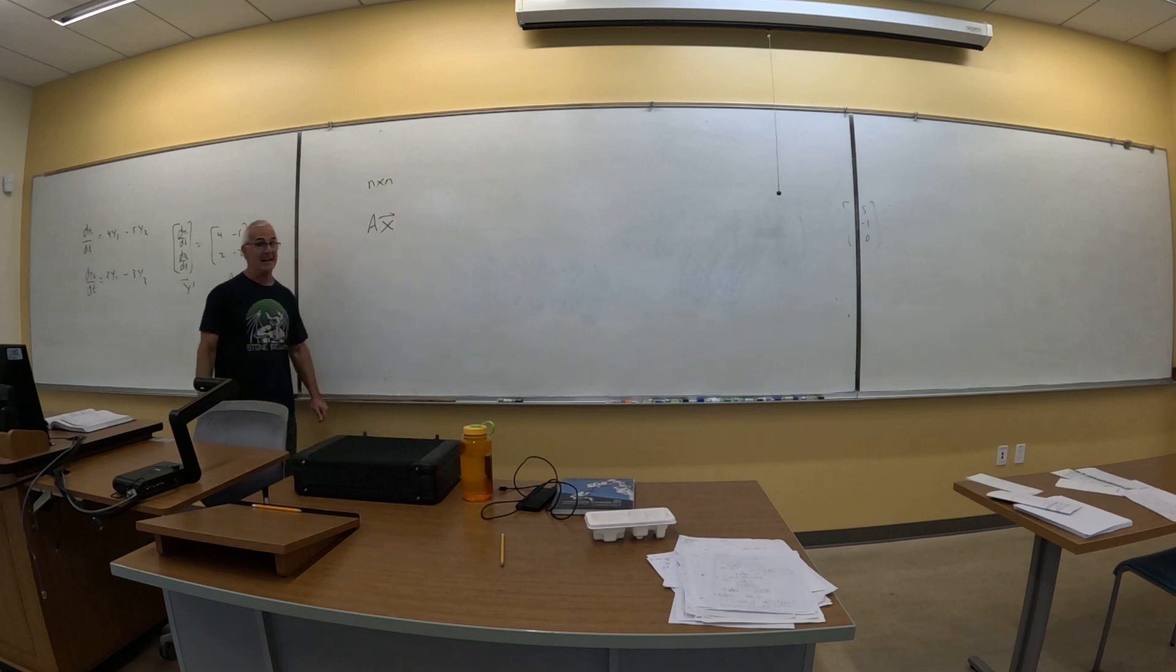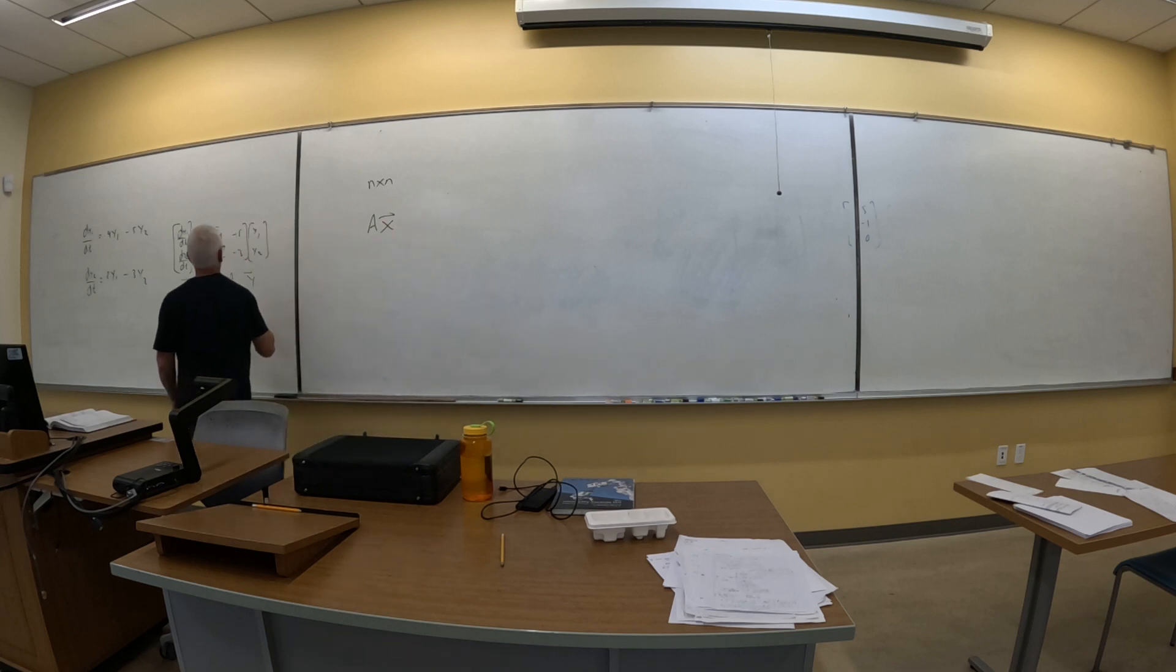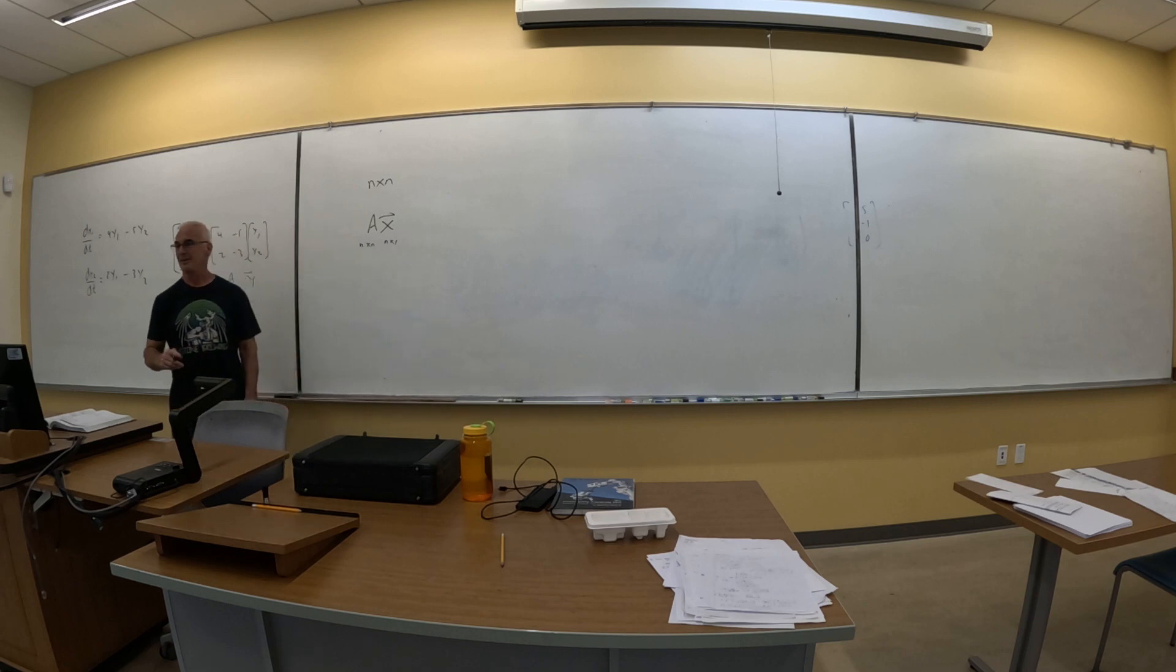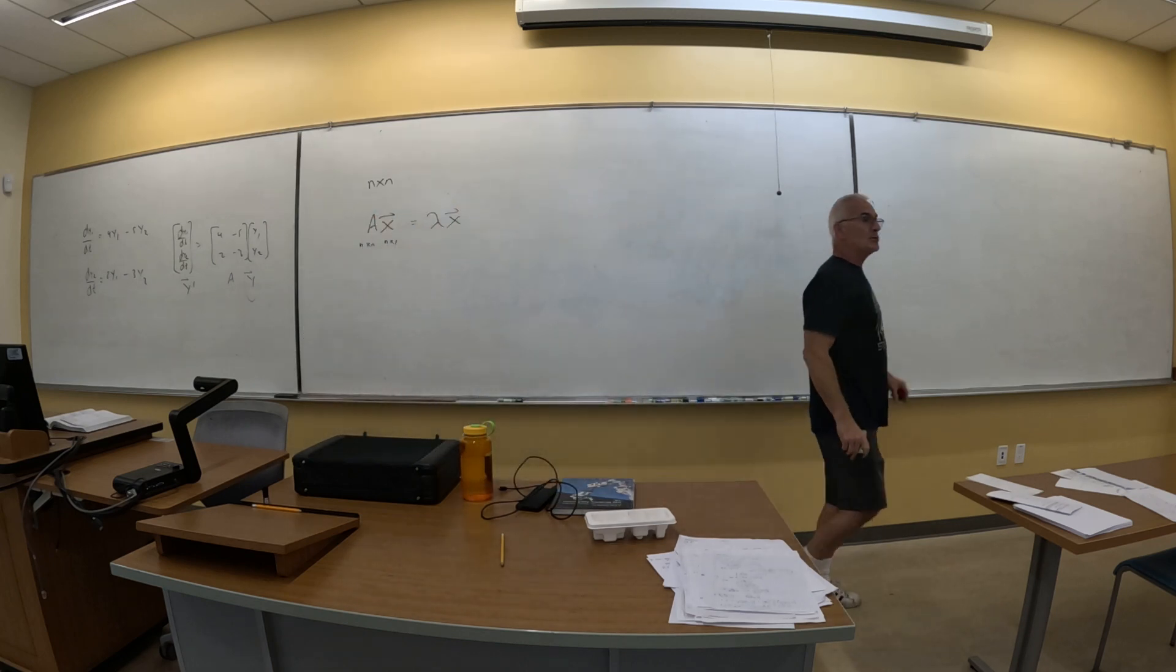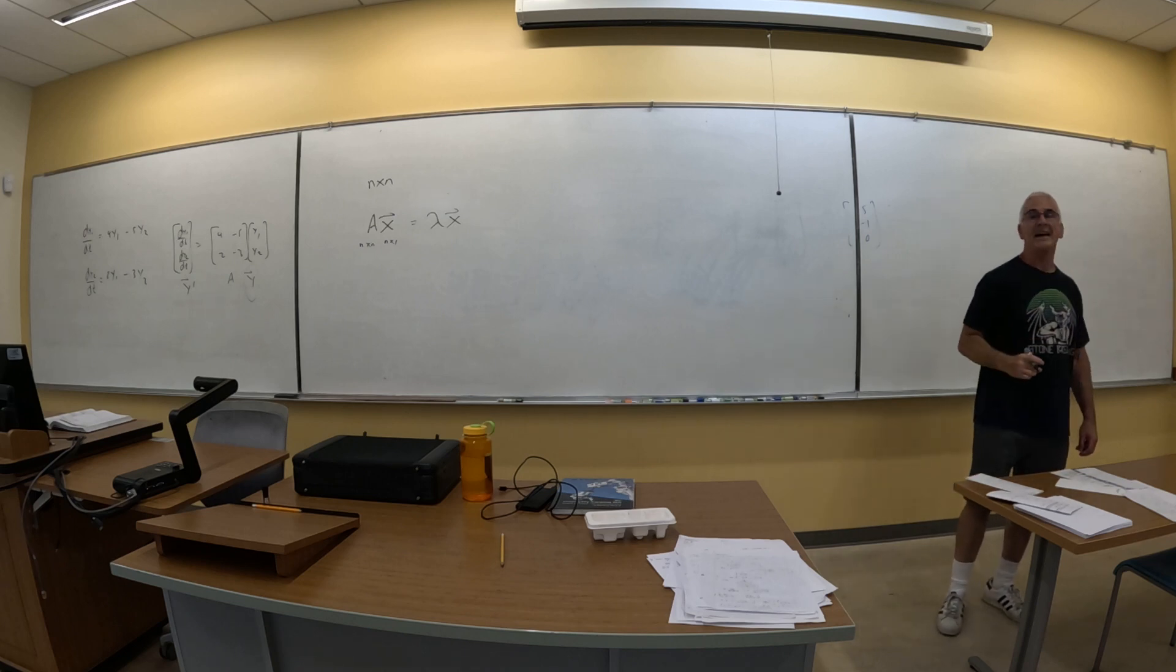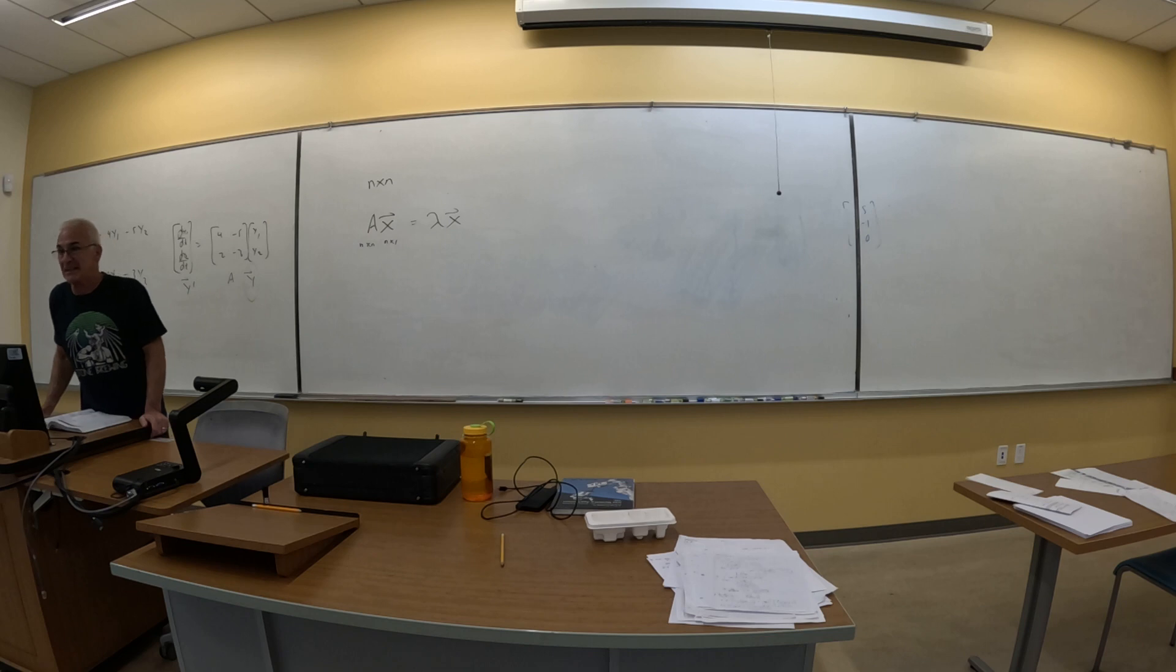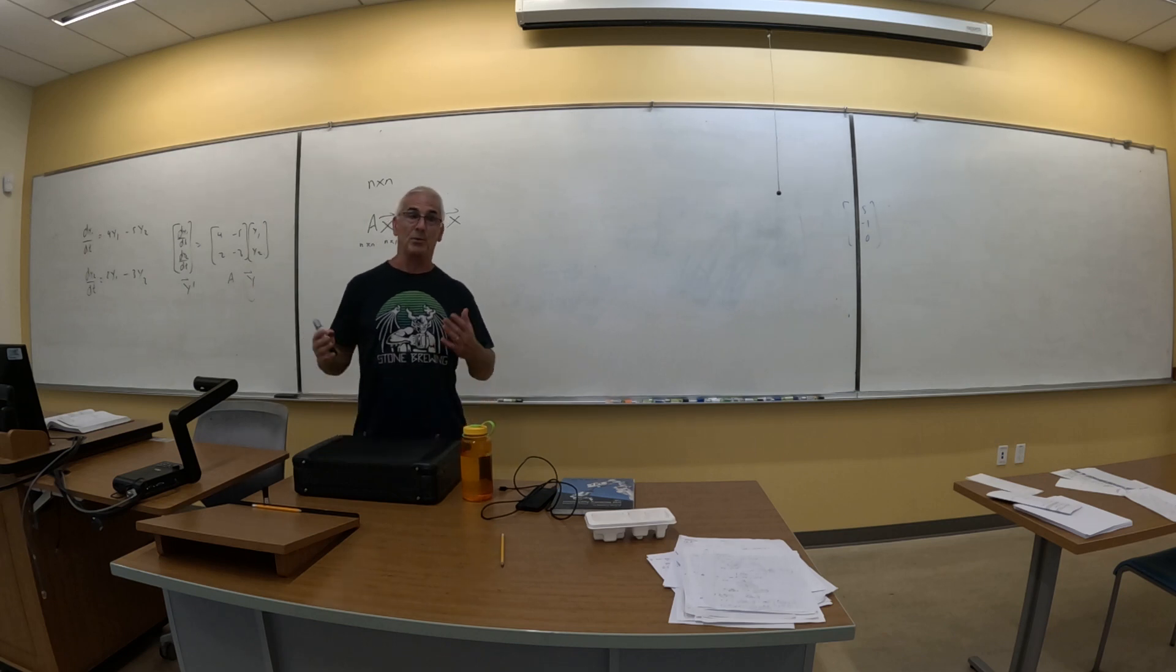I have an n by n matrix A, has to be square. n by n matrix A, and when I multiply it by the column matrix, I multiply the 2 by 2 times the 2 by 1, and I got a 2 by 1. So this is n by n, this is n by 1, so what's the result? n by 1. And our goal is to write this as a scalar multiple of the original x. If I can do this, lambda is called the eigenvalue, but the more important one is x, and that's called the eigenvector.